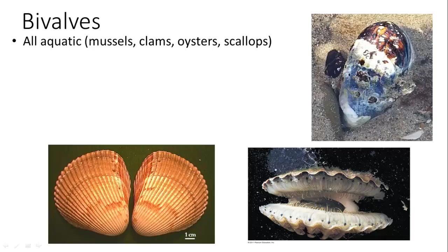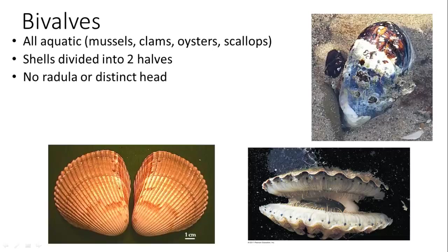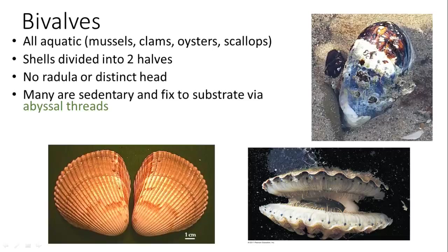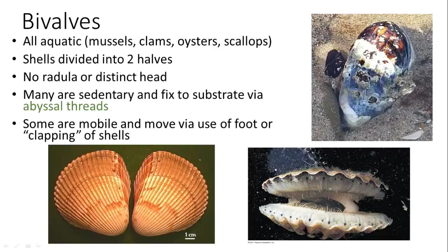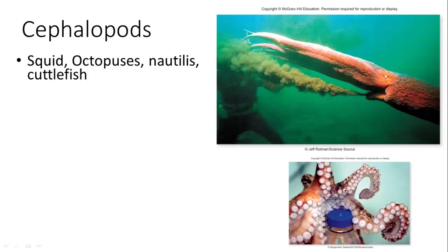Bivalves are a very diverse group — mussels, clams, oysters, scallops, and abalone — all aquatic, with shells divided into two halves. They have no radula and no distinct head. Many are sedentary and attach to substrate, though some can move through water or sandy sea bottoms.